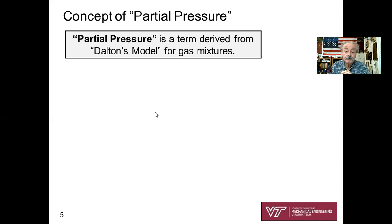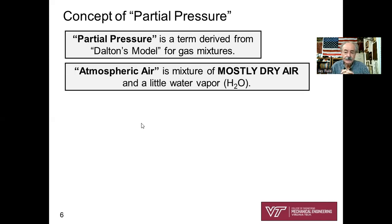The concept of partial pressure is a key variable introduced in the mixtures chapter, derived from Dalton's model for gas mixtures. Atmospheric air — what we breathe — is a mixture. It's mostly dry air, with a little bit of water vapor mixed in. That's simply the way our Earth works: mostly dry air and a little bit of water vapor.